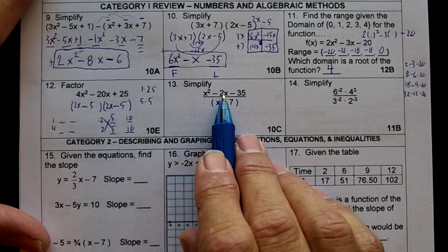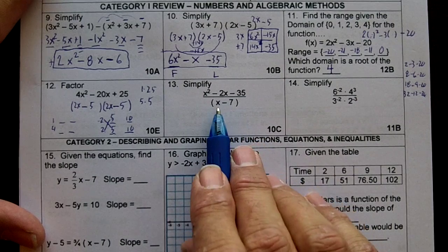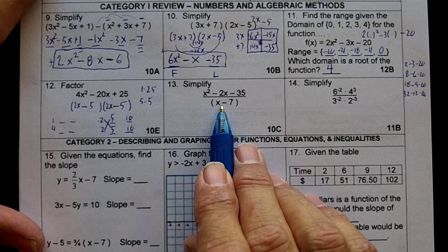Number 13, simplify x squared minus 2x minus 35 divided by x minus 7. I'm going to show you two ways to do this.